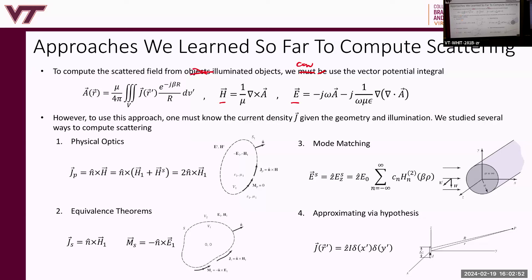We've learned a couple of approaches to obtain this current density for a given geometry and illumination. One is physical optics — we learned this last semester. The physical optics current density is N cross H, where H is composed of H incident and H scattered. We're assuming this is a conductive obstacle, and we can approximate it as being locally infinite and planar. Therefore, H incident equals H scattered, so you get 2N cross H_i.